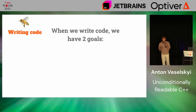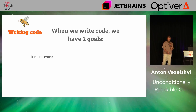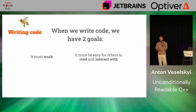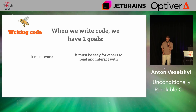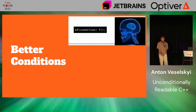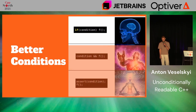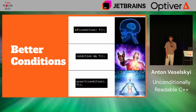So what's that about? When we write code, we have two goals. First, this code must work, and the second one, it must be readable and easy to interact with, meaning other people will read, call, use, God forbid, extend or rework your code. My talk is going to be a compilation of tips for code readability focused on conditions and better conditions, to make them descriptive and verbose.